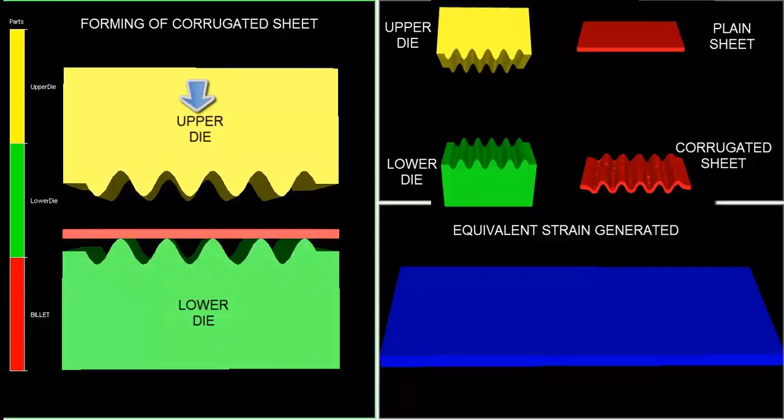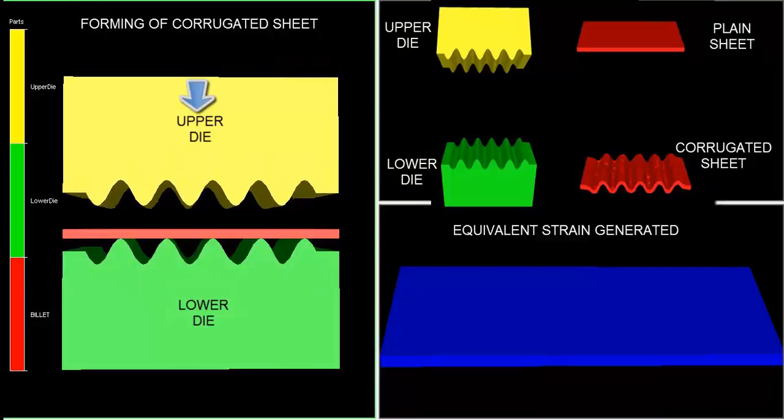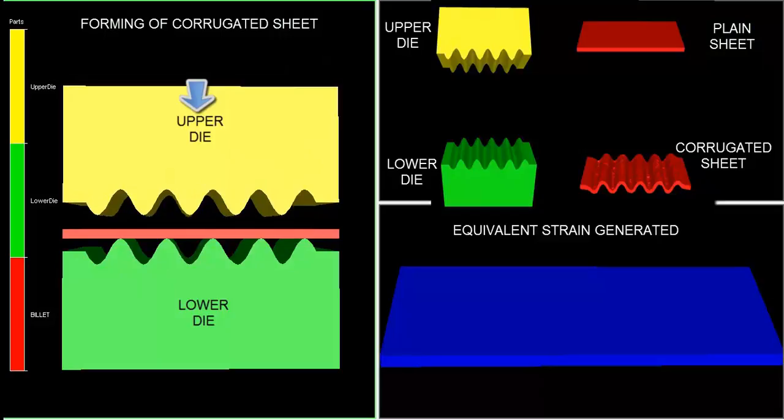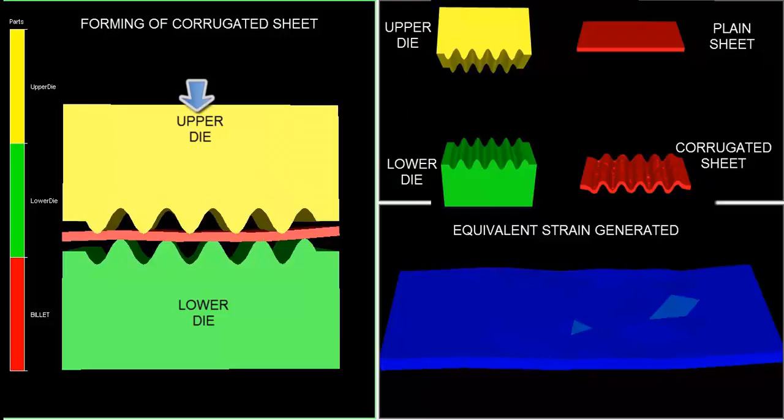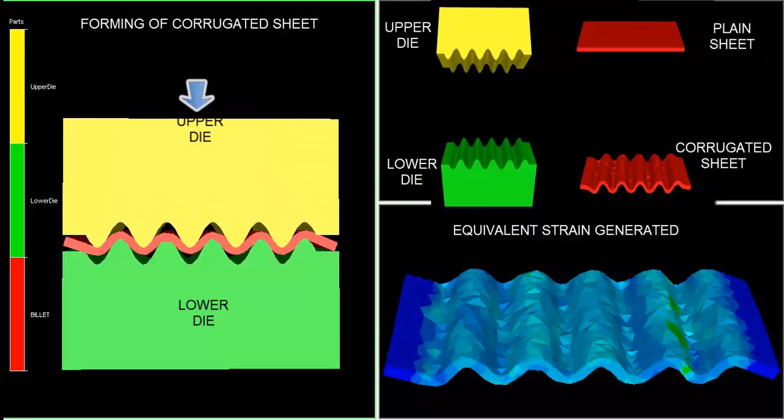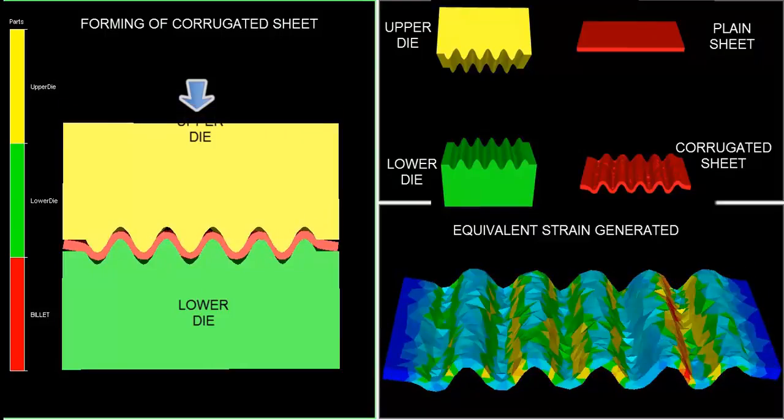Corrugated sheet is formed by a forming operation, which may be defined as an upsetting process normally performed on the sheet. The forming process can be carried out cold or hot. In this simulation of corrugated sheet forming, the cold forming process is used.